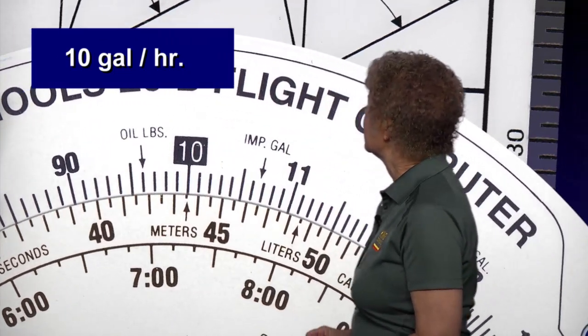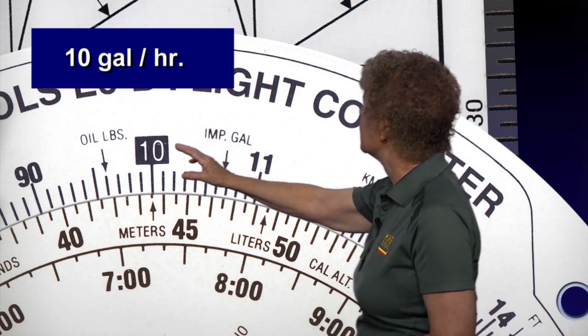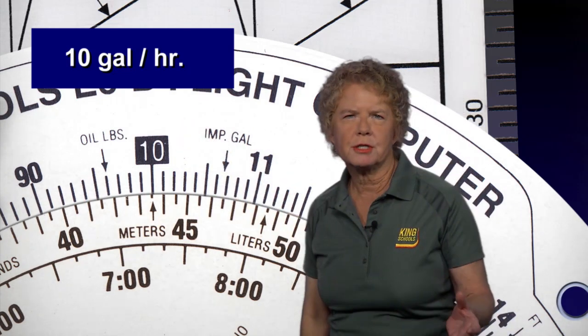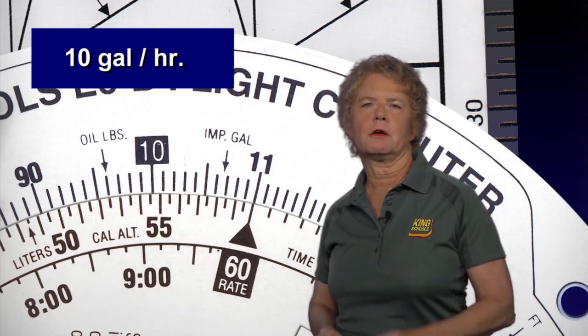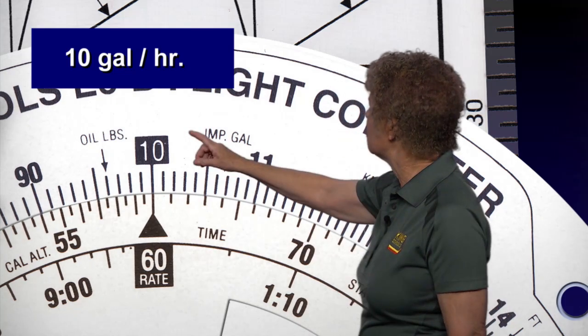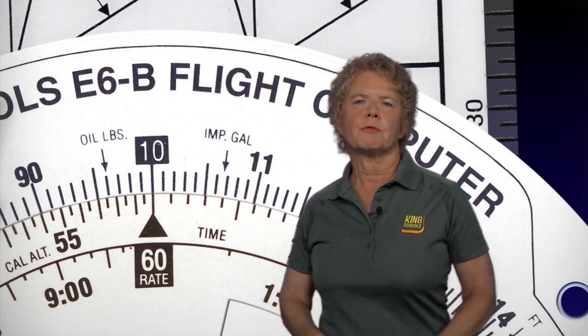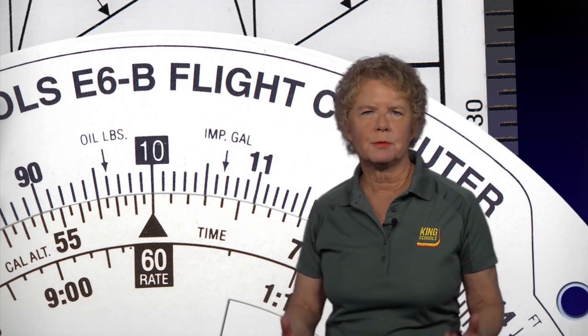Let's set up a ratio. Assume that you've used 10 gallons of fuel in one hour. Find the 10 on the outside scale representing 10 gallons, and move the inner dial until 60 minutes is lined up underneath the 10. You've now set up the ratio of 10 gallons every 60 minutes, or 10 gallons per hour.